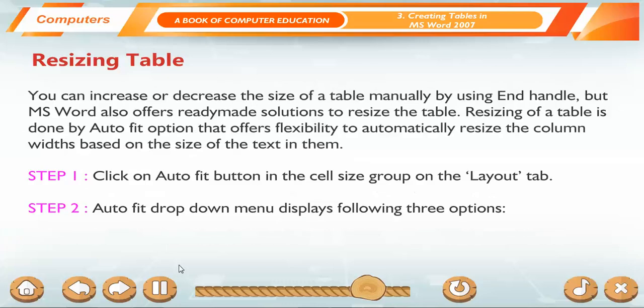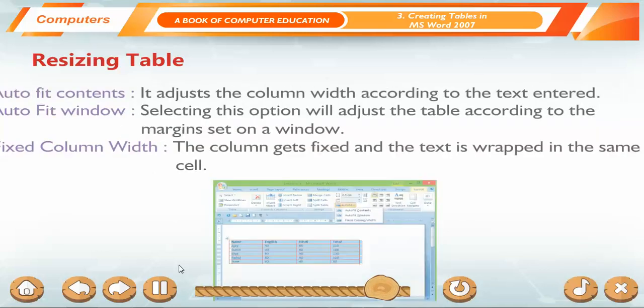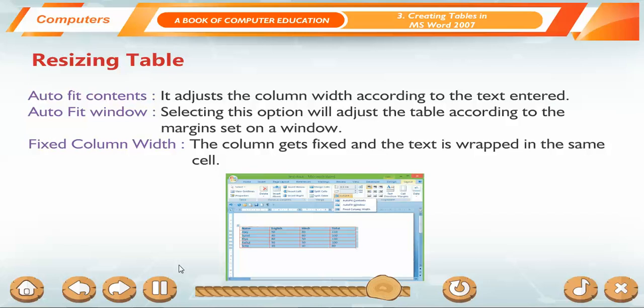Resizing Table. You can increase or decrease the size of a table manually by using End Handle, but MS Word also offers ready-made solutions to resize the table. Resizing of a table is done by AutoFit option that offers flexibility to automatically resize the column width based on the size of the text in them. Step 1: Click on AutoFit button in the cell size group on the Layout tab. Step 2: AutoFit drop-down menu displays following three options. AutoFit Contents adjusts the column width according to the text entered. AutoFit Window, selecting this option will adjust the table according to the margins set on a window. Fixed column width, the column gets fixed and the text is wrapped in the same cell.